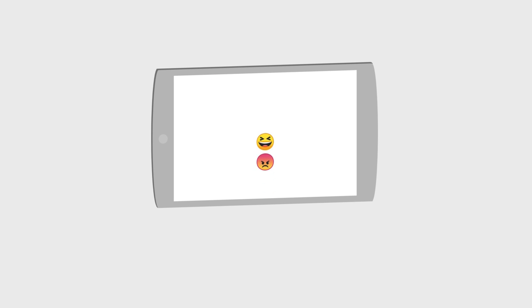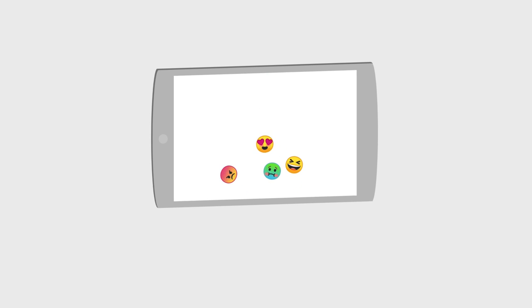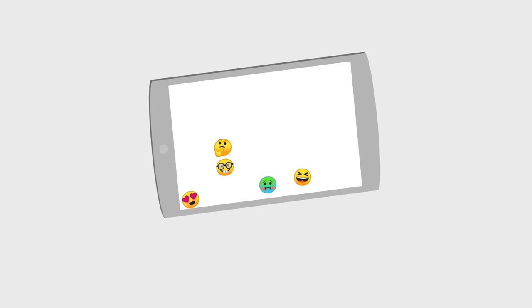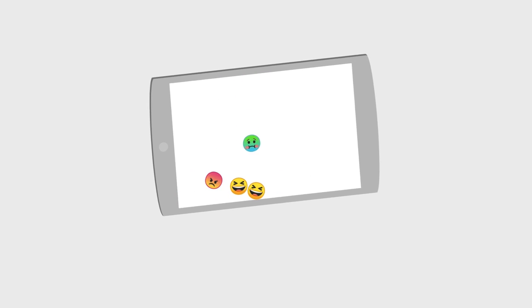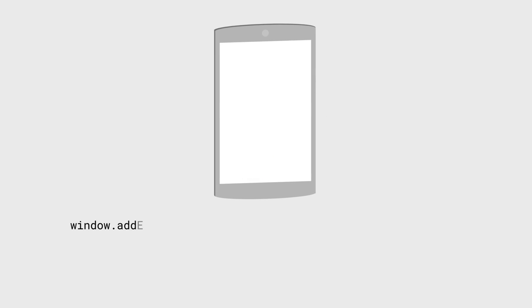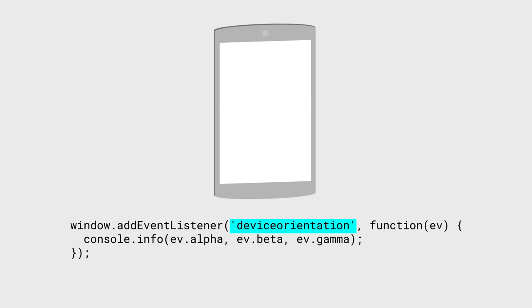But what if you want finer information on the device's position? Recently, I built a game, and I wanted finer detail about the current orientation. For that, you can listen to the device orientation event.